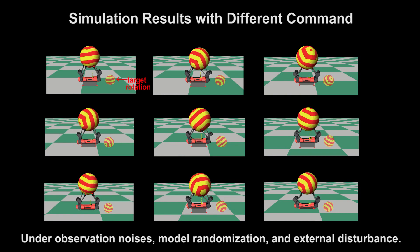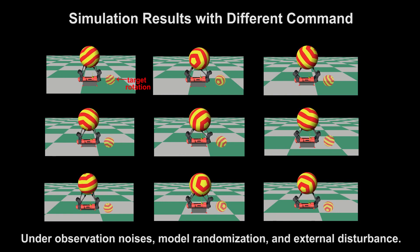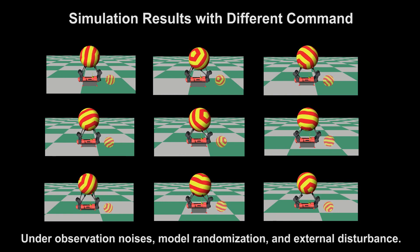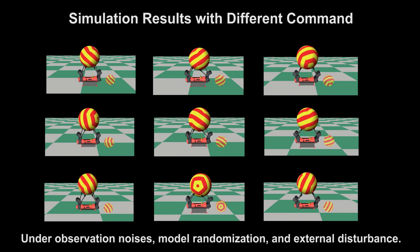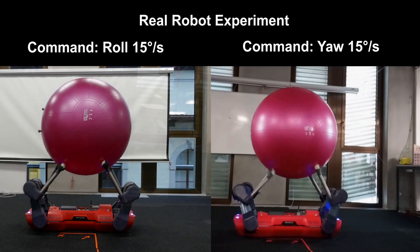In the simulation the robot learns to rotate the ball at random speeds in roll, pitch and yaw directions. For robustness, domain randomization as well as random external forces and observation noises are added during the training process.